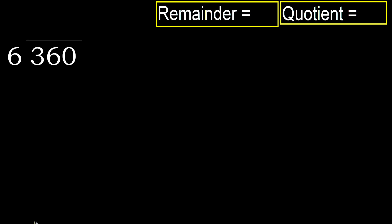360 divided by 6. 3 is less. Therefore, next. 36 is not less.